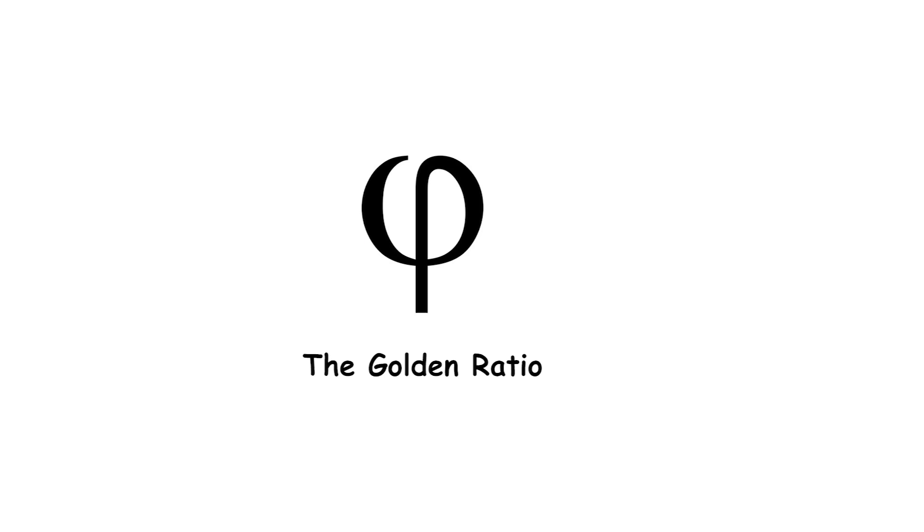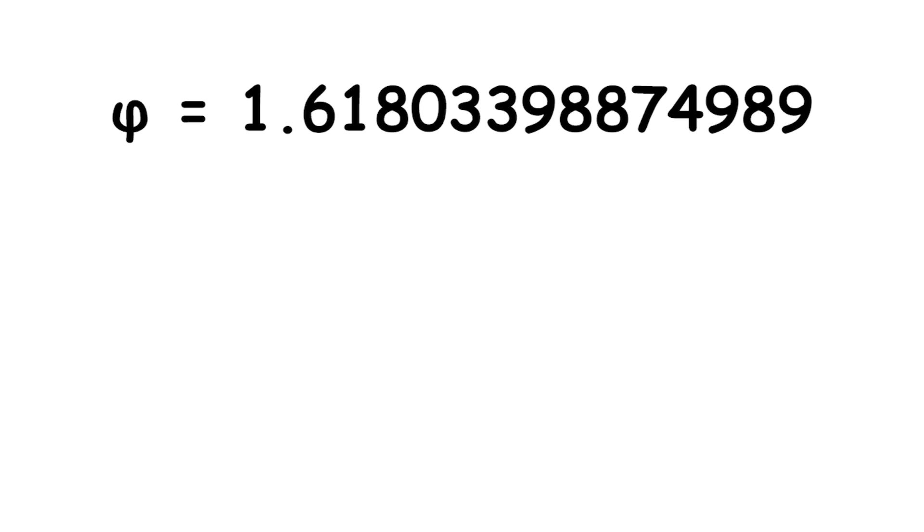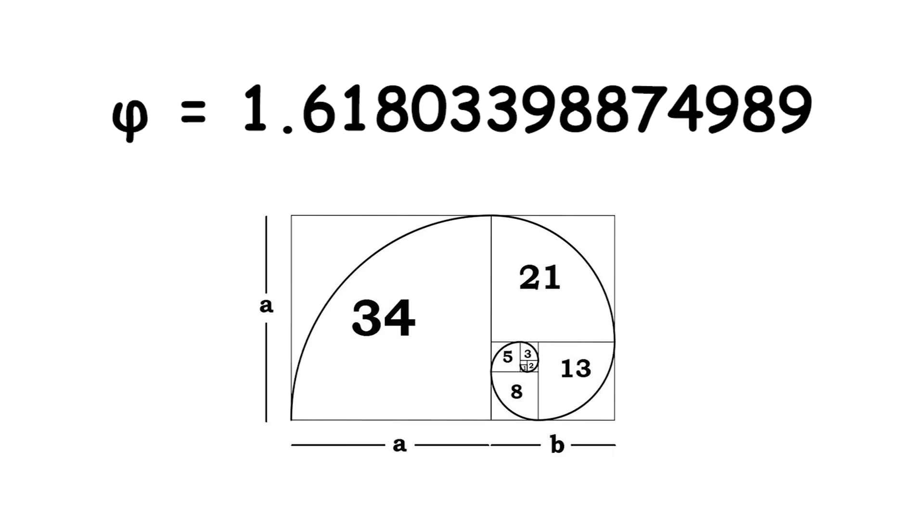The golden ratio, represented by the Greek letter phi, is approximately equal to 1.618 and is defined as a ratio where the ratio of the whole to the larger part is equal to the ratio of the larger part to the smaller part. In other words, if you have a line segment divided into two parts, the golden ratio describes the perfect proportion where the longer part is to the shorter part as the whole line is to the longer part.